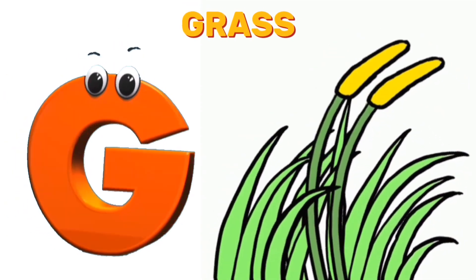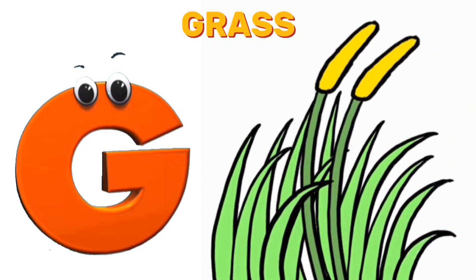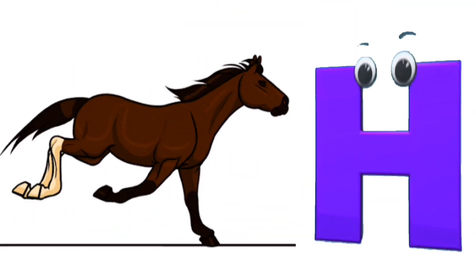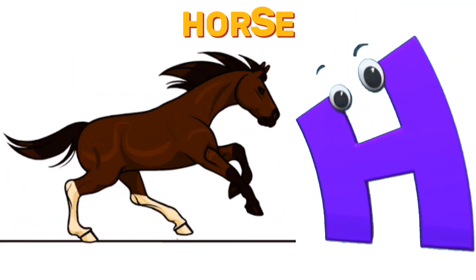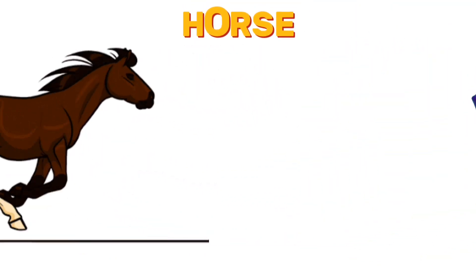G is for Grass. G, G. Grass. H is for Horse. H, H. Horse.